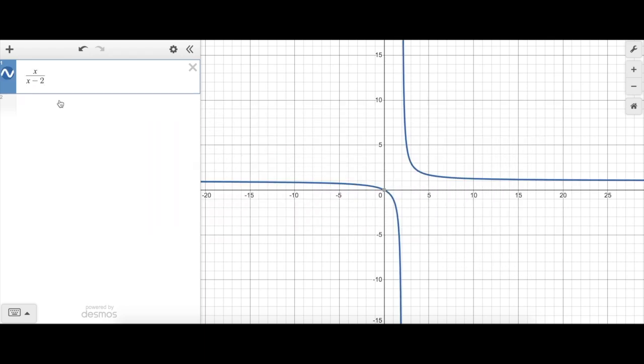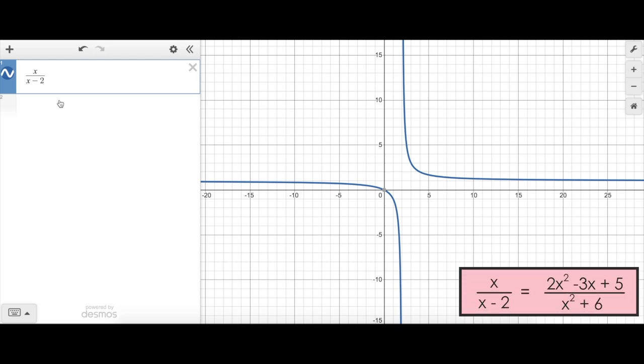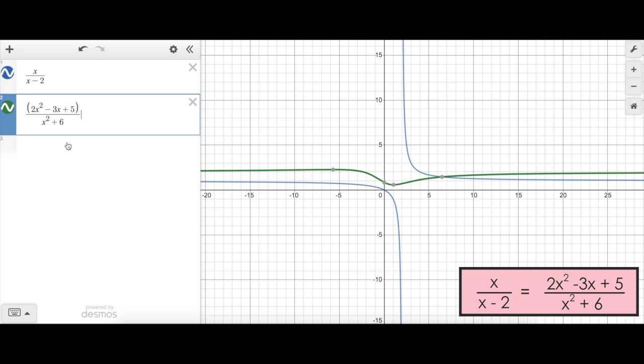So let's say you wanted to know when the rational expression x over x minus 2 is equal to the monstrous rational expression 2x squared minus 3x plus 5 over x squared plus 6. But you don't want to do all the crazy algebra required to find the point of intersection. Or you've already found the point of intersection and you just want to check your work using a graphing calculator.